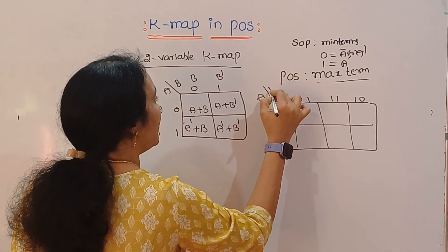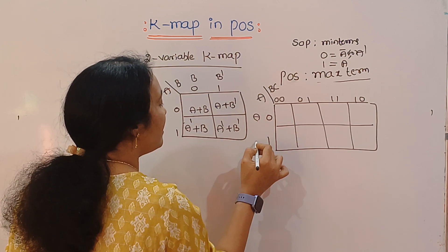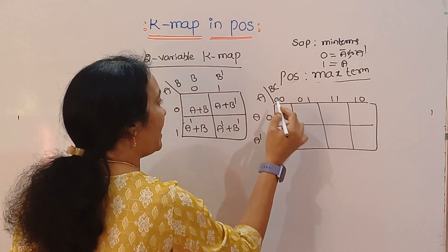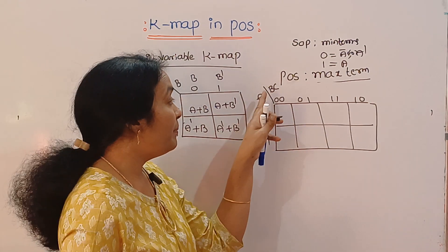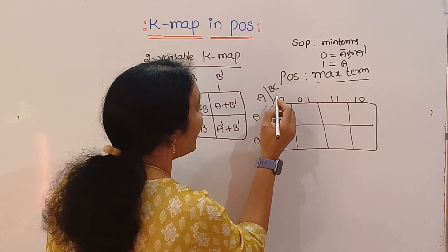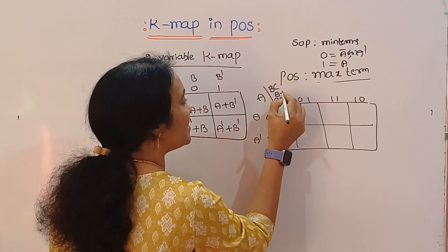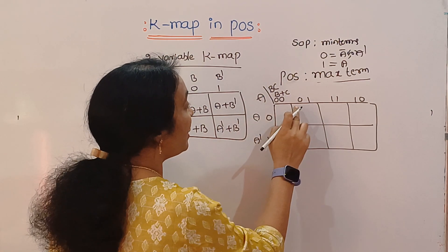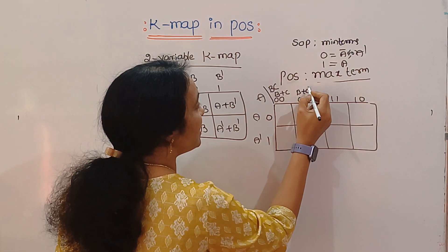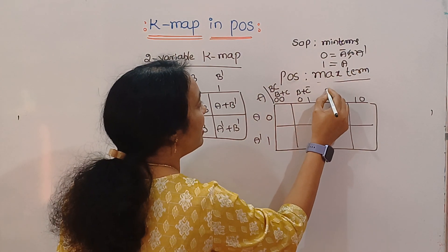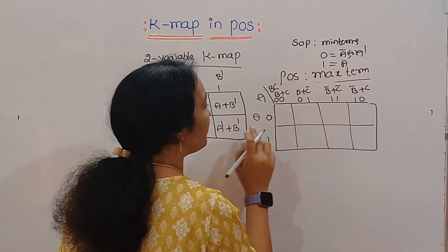For a 3-variable K-map, we have 0 and 1 for A, and BC on the other axis. 0 represents with A and 1 represents with A complement or A bar. For BC: 0,0 gives B complement plus C complement; 0,1 gives B complement plus C; 1,1 gives B plus C bar; and 1,0 gives B plus C bar or C complement.